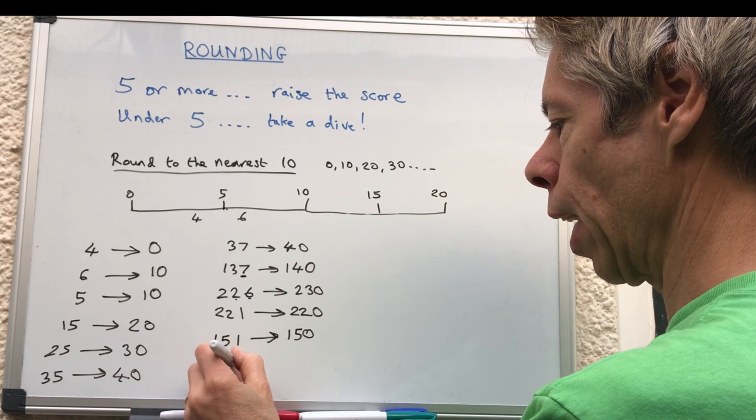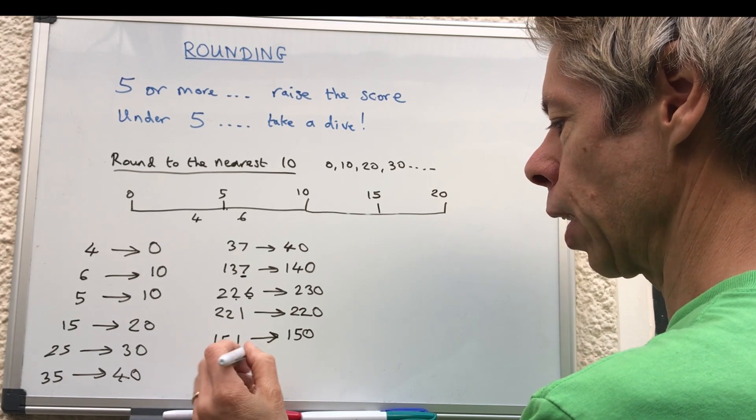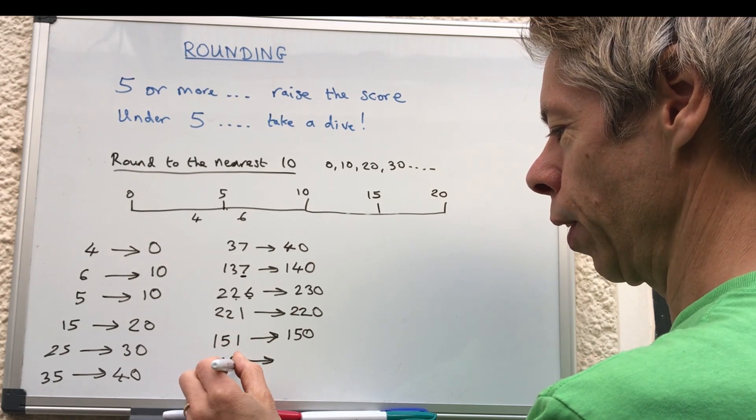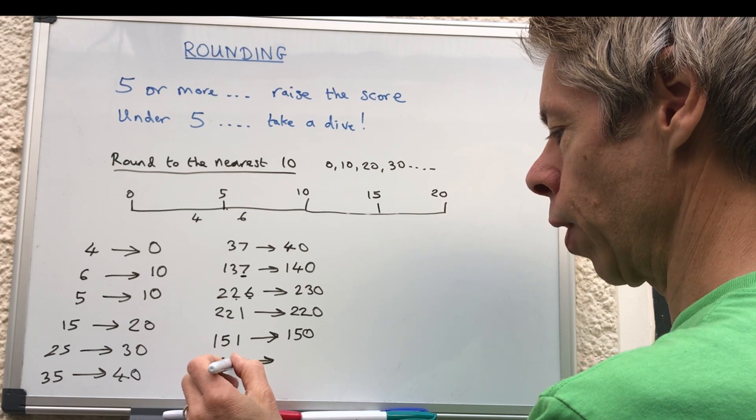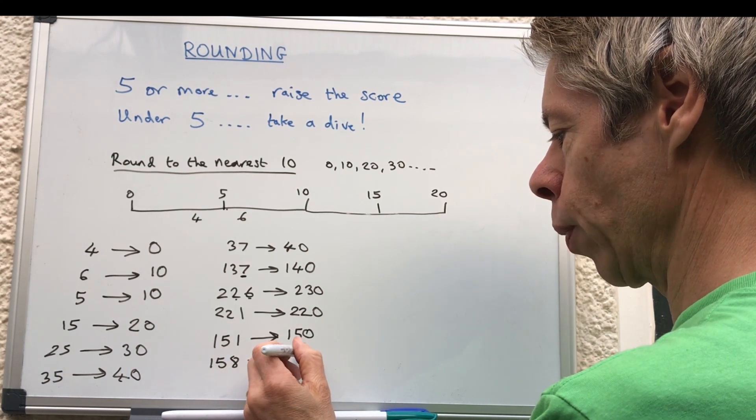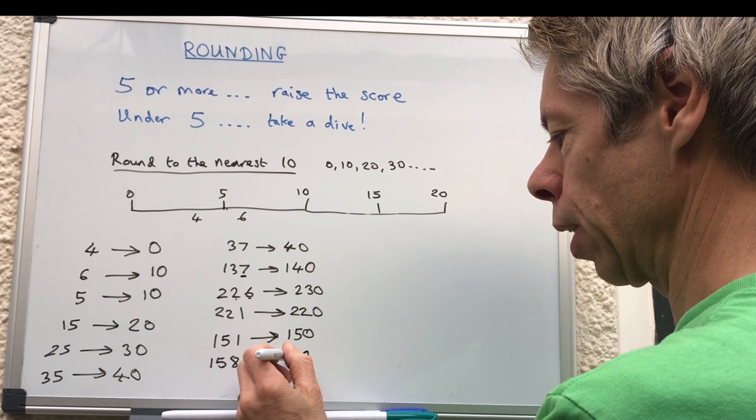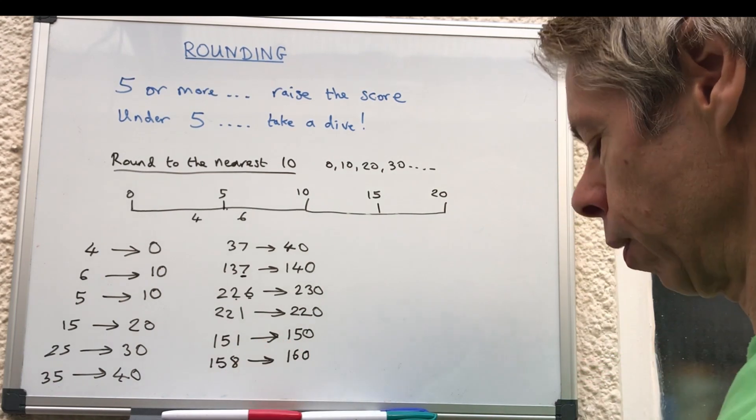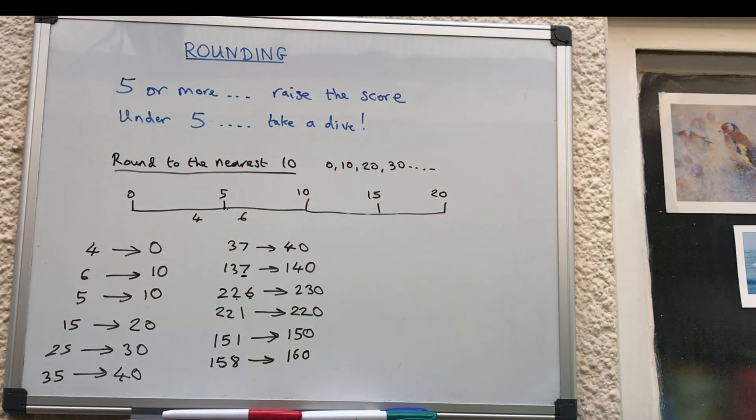If we had 158, because that's more than 4, 5 or over, we've got to put a zero because it's rounding to the nearest 10, but we've got to change that 5 up to a 6, so 160. Right, so that's rounding to the nearest 10.